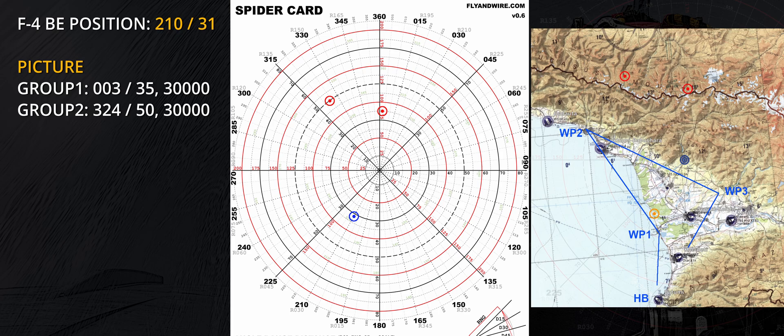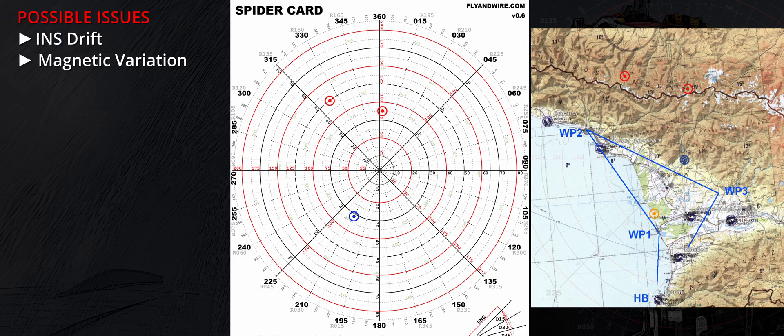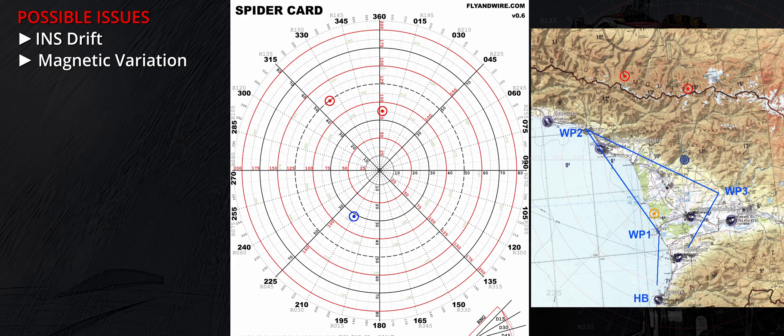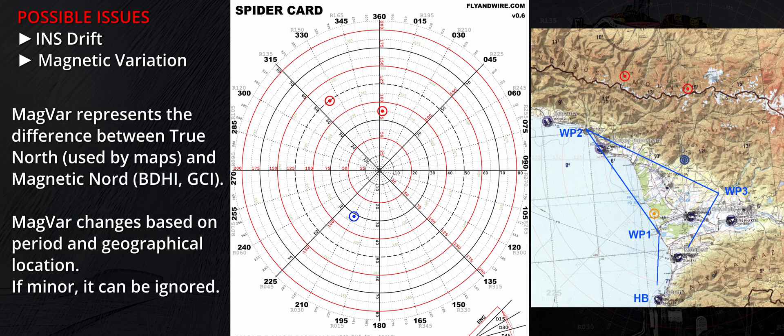Up to this point everything sounds quite simple and with a bit of practice the process takes no time. However, there are a few possible issues. Two of the most common are the INS's tendency to drift and the magnetic variation. The first is a problem only in specific situations or over prolonged flights. Also, a certain degree of imprecision is normal when operating hardware that, at its core, is more than half a century old. The second is intrinsic to the nature of our planet and the crew should evaluate its relevancy. I ignored the issue in this video entirely, but depending on the tasking and ranges involved, 6.5 degrees can result in a surprisingly large error.